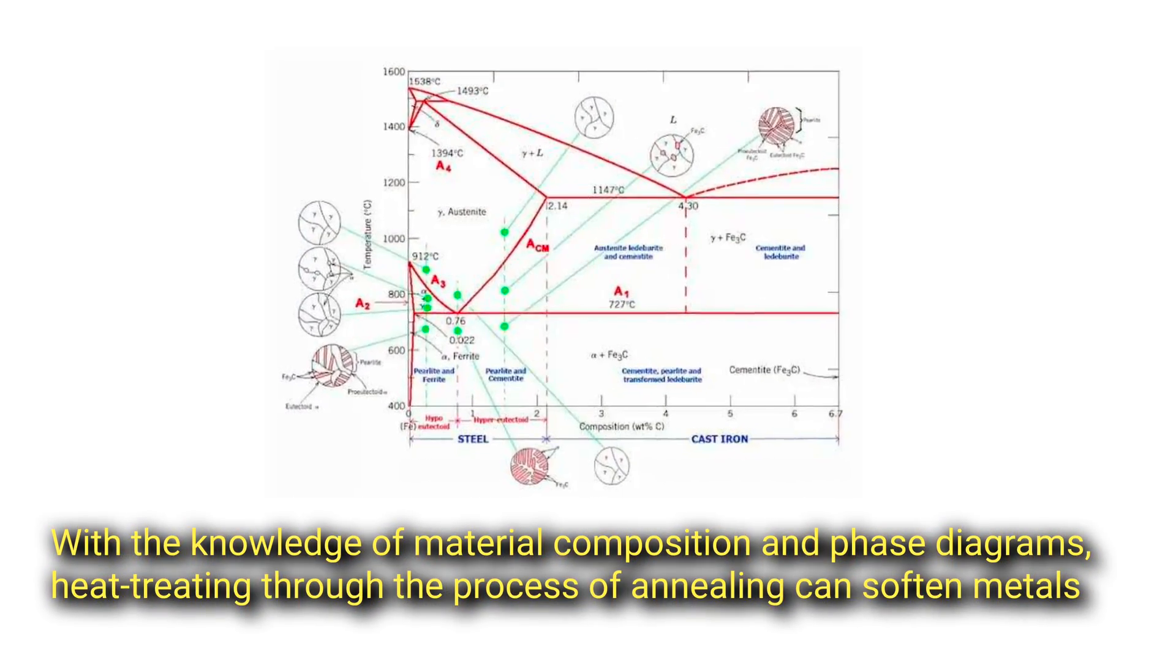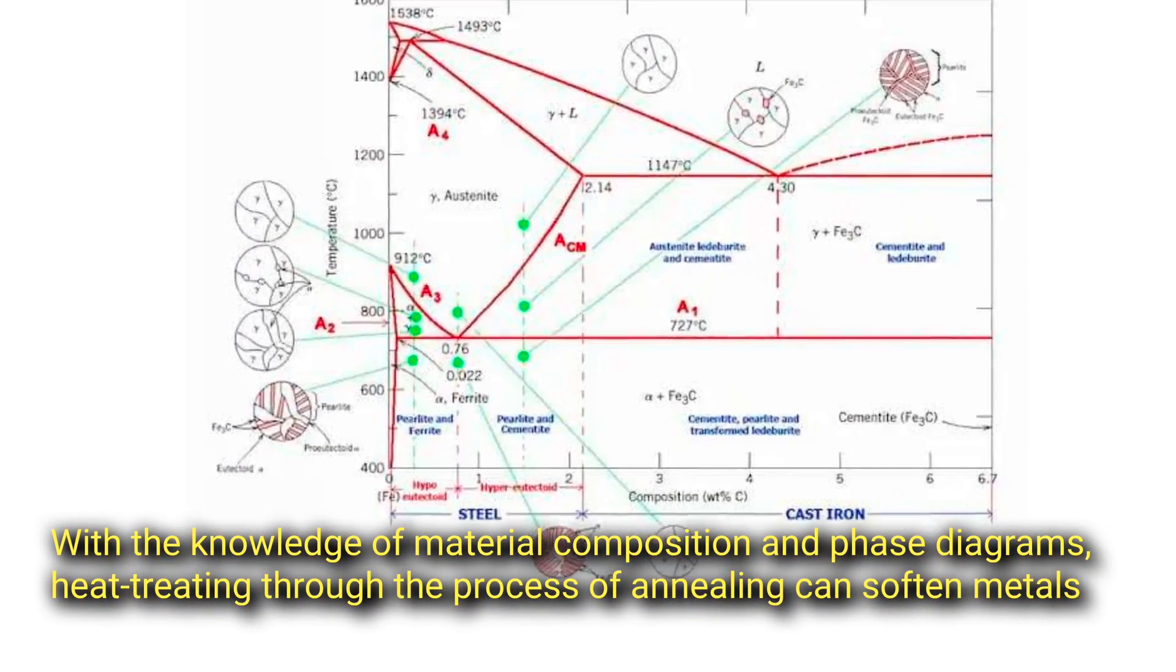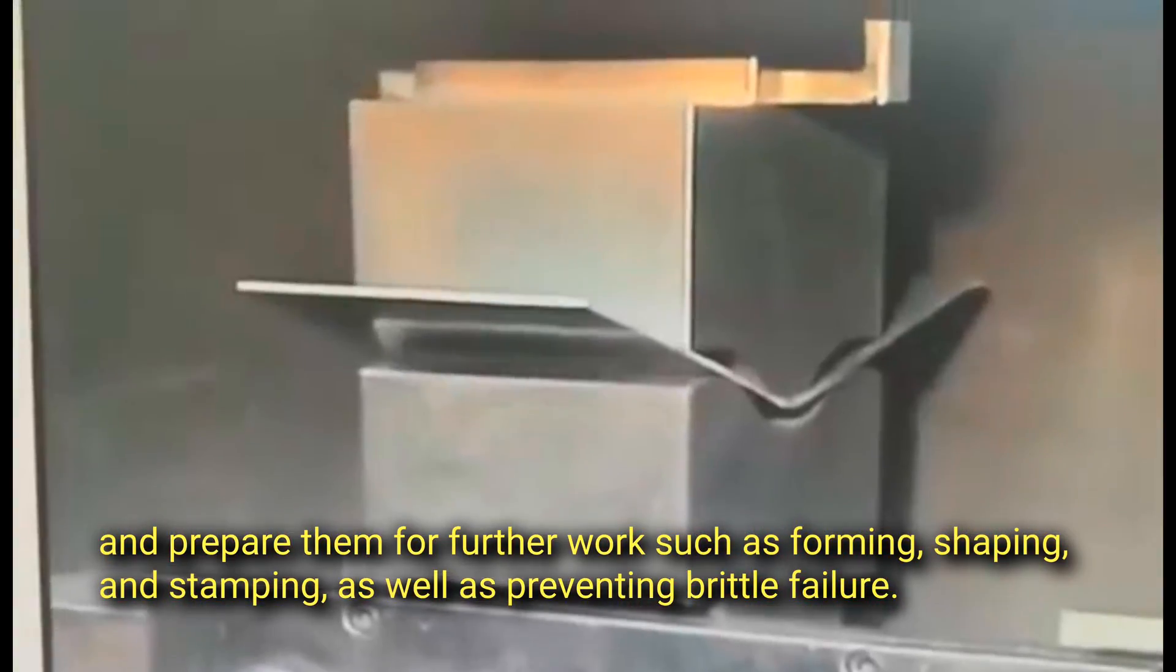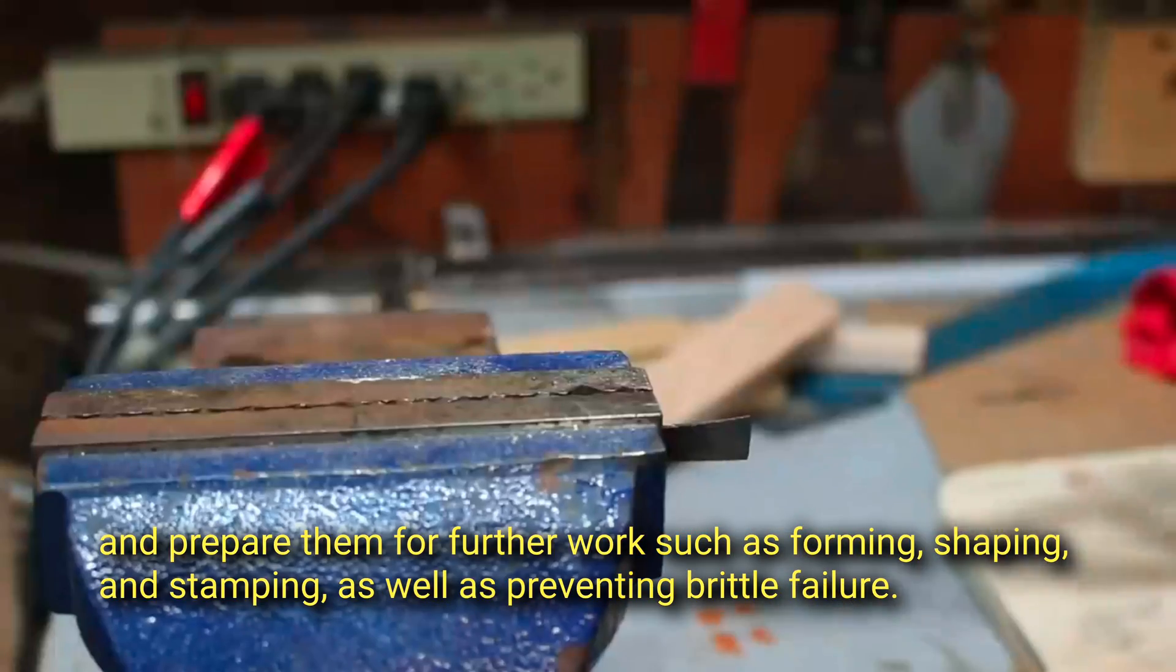With the knowledge of material composition and phase diagrams, heat treating through the process of annealing can soften metals and prepare them for further work such as forming, shaping, and stamping, as well as preventing brittle failure.